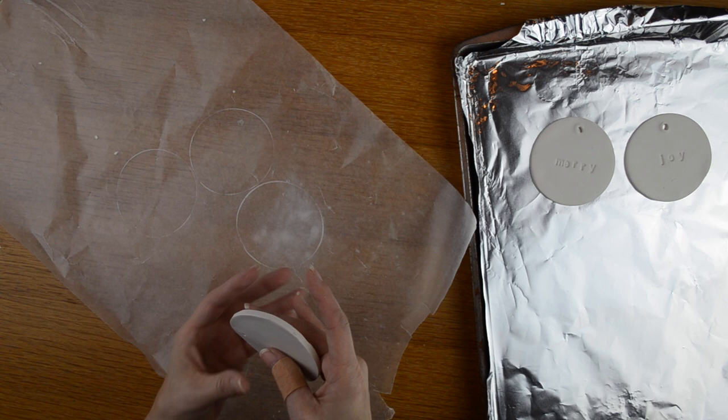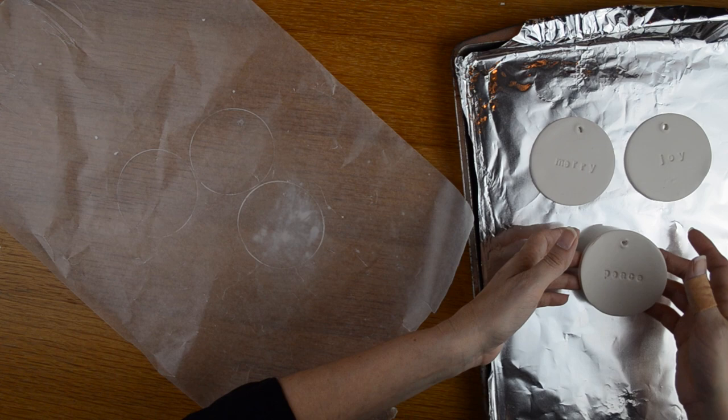Now that I have those letters on my ornaments I am going to go ahead and transfer those onto my baking sheet. I do have some tinfoil covering my baking sheet. This is just to protect my pan.